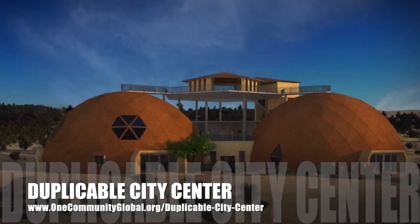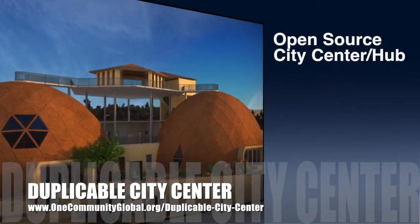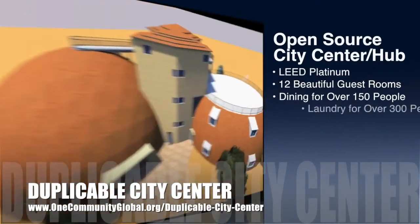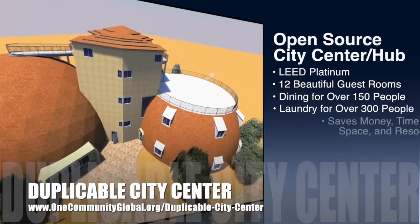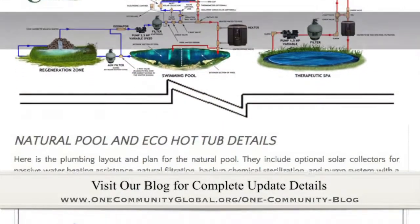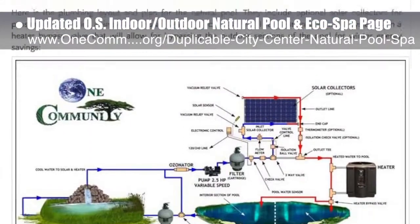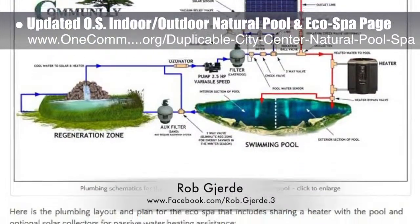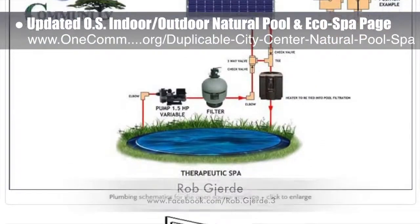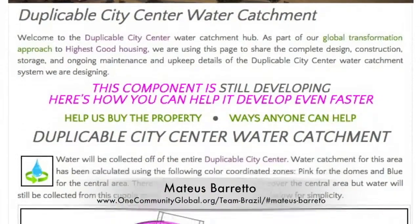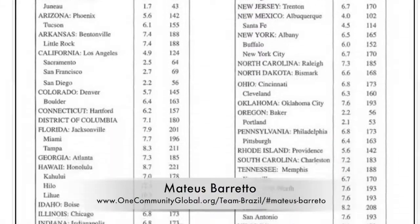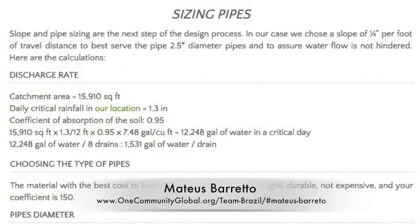OneCommunity is also creating an open source duplicable city center designed to be LEED Platinum certified, provide 12 guest rooms, dining for over 150 people, and laundry and recreation space for over 300 people, all while saving money, time, space, and resources. This week the core team updated the open source indoor-outdoor natural pool and eco-spa page with the plumbing design specifics of Rob Gerdy, pool design and construction expert, owner of Sorico Design and Consulting. Mateo Spargetto, civil engineering student specializing in hydraulics, finished the calculations for the Duplicable City Center water catchment specifics, including pipe sizing and selection.